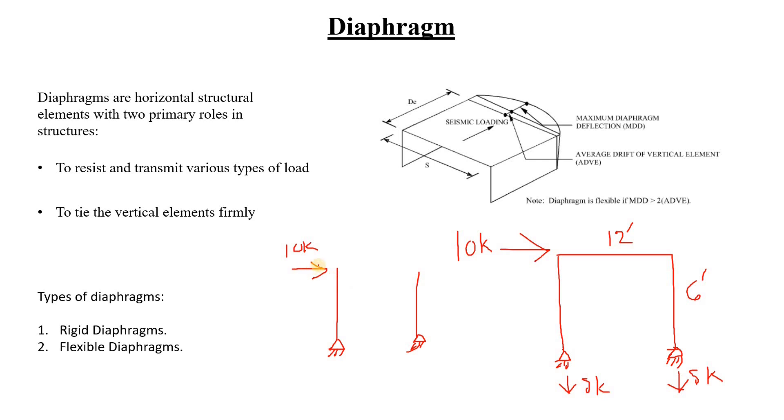First of all, this load is not going to be transmitted to this another vertical member. Let's say this is a vertical member. It's not going to tie these both vertical members, they're not tied together because there's a horizontal member missing there.